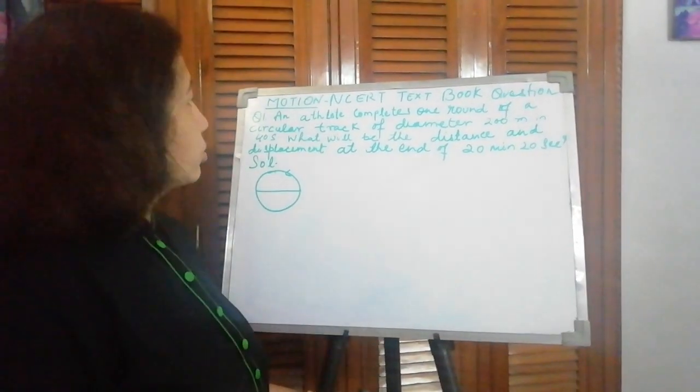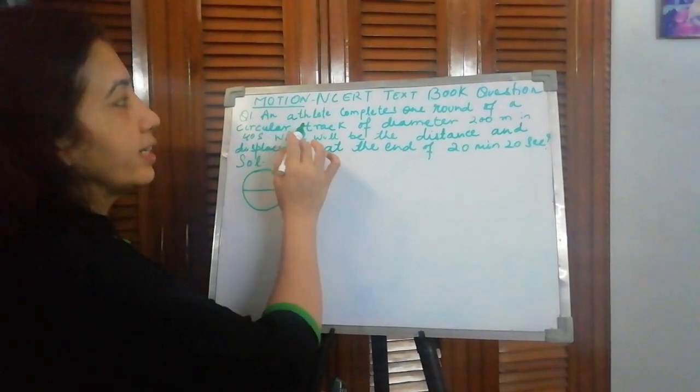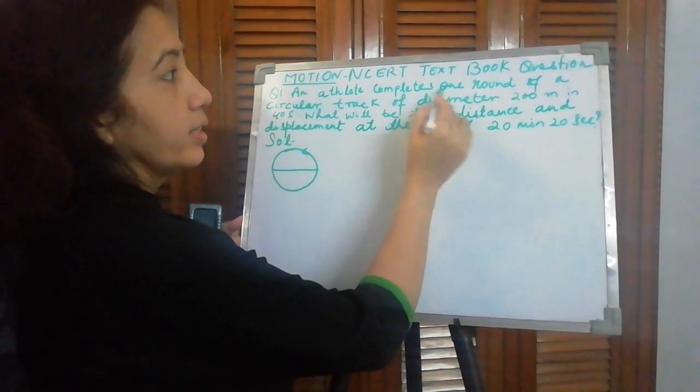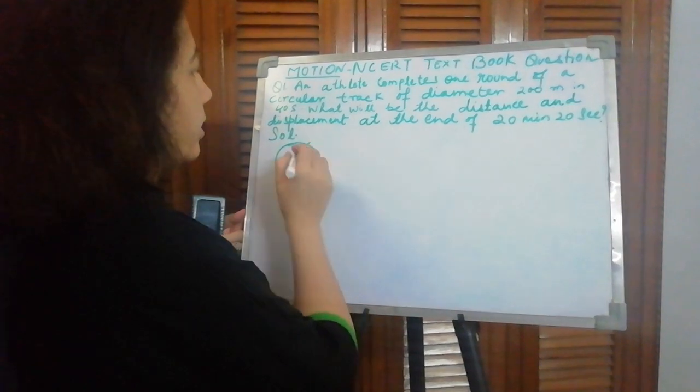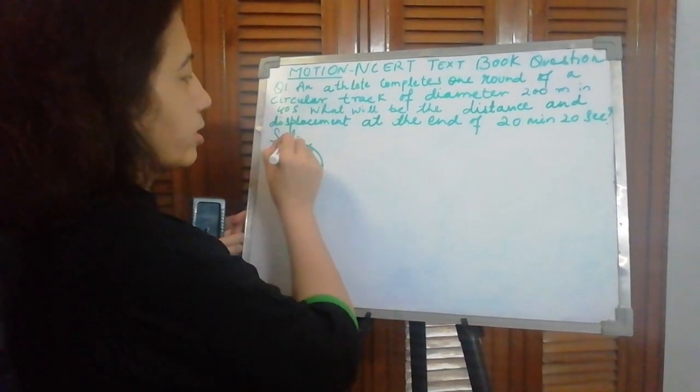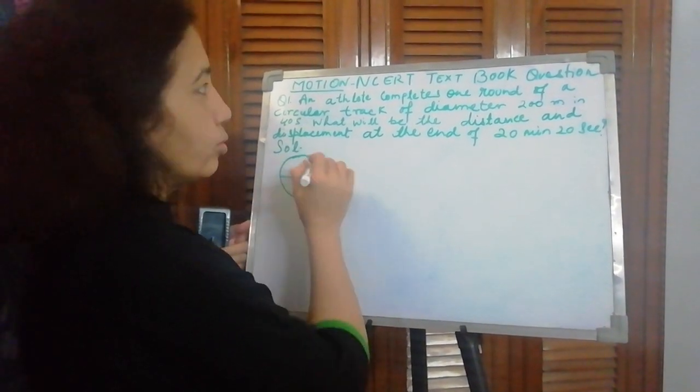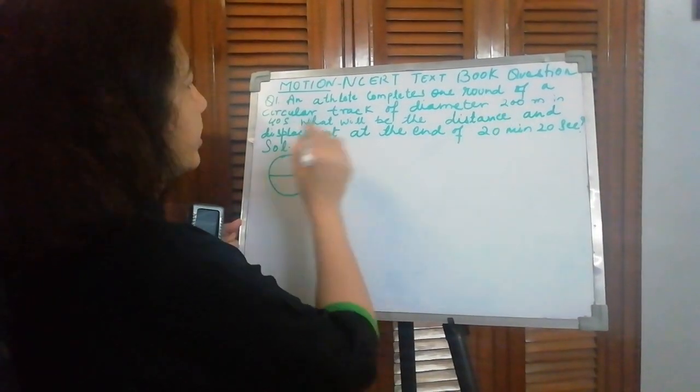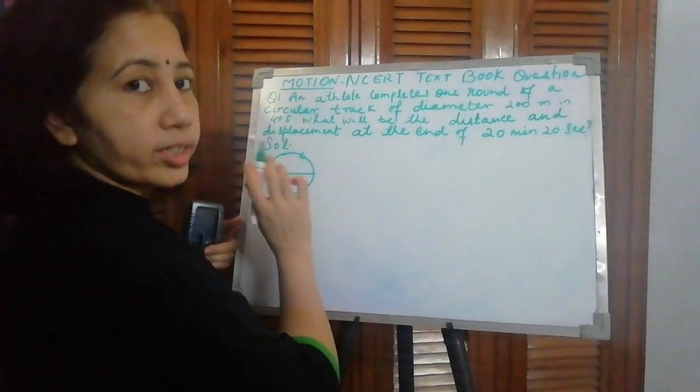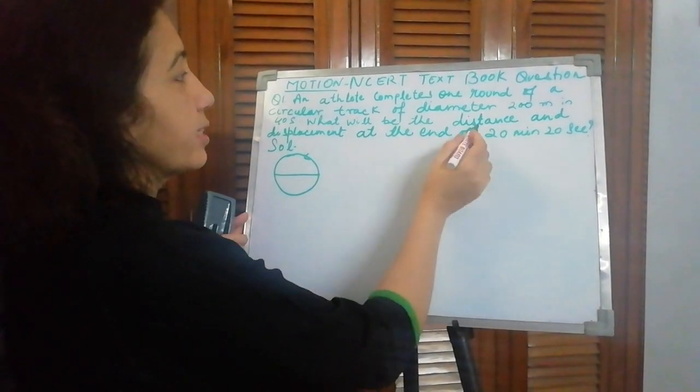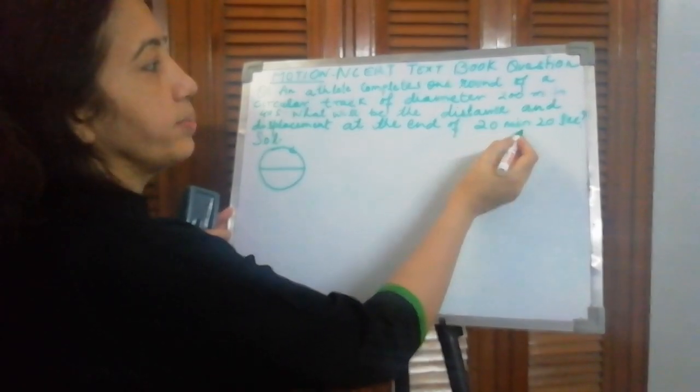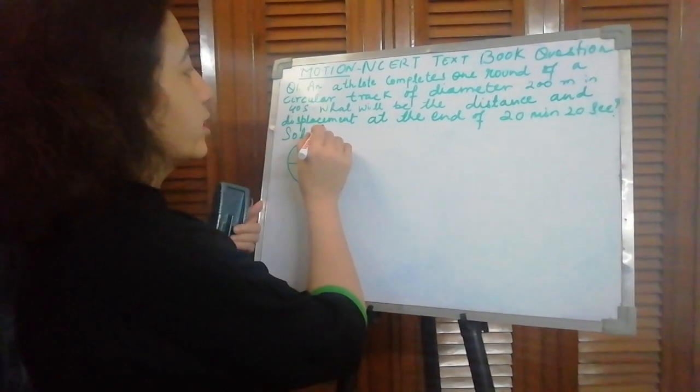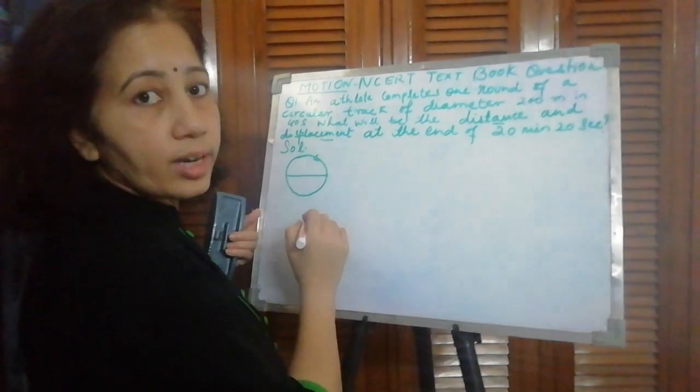In your exercise, the first question is: an athlete completes one round of a circular track of diameter 200 meter in 40 seconds. What will be the distance and displacement at the end of 20 minutes 20 seconds?